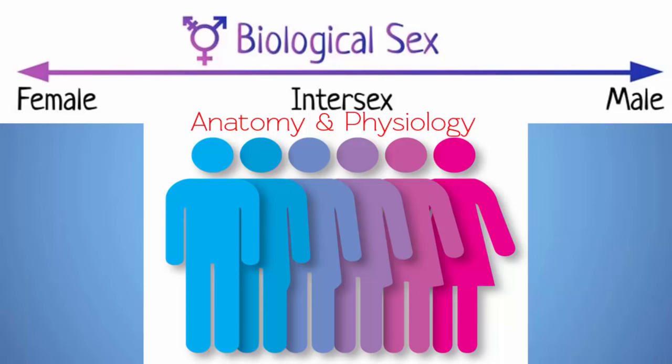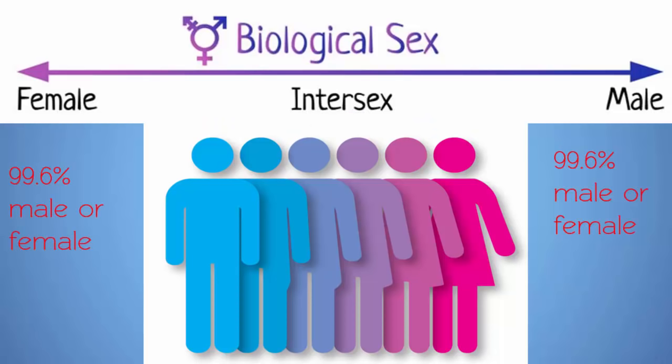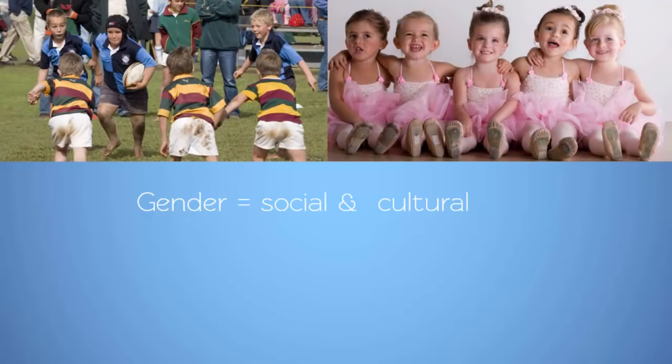Approximately 99.6% of all human beings are born biologically male or female. The other 0.4% of births are those of intersex people or hermaphrodites, who have the anatomical characteristics of both sexes or indeterminate genitalia. The term gender, on the other hand, refers to the social and culturally created understandings, expectations, and norms which relate to sex differences.